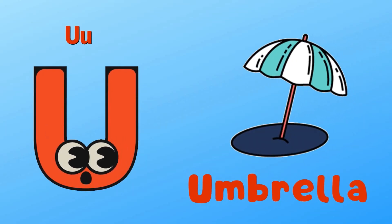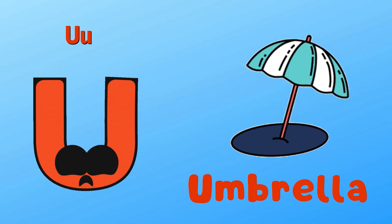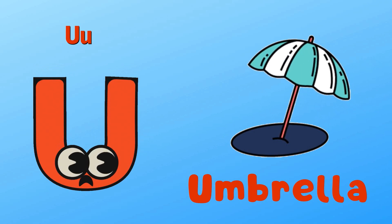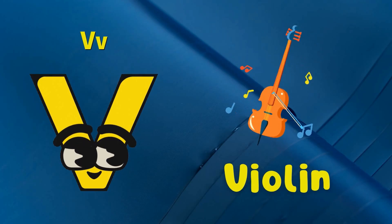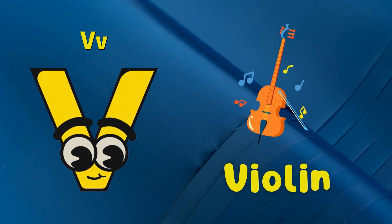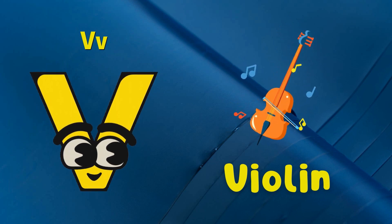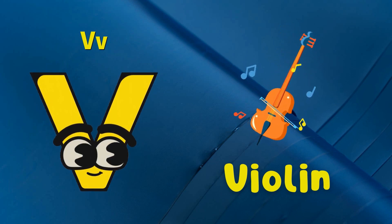U is for Umbrella, a-a-Umbrella. V is for Violin, v-v-Violin, V.